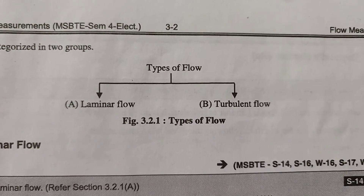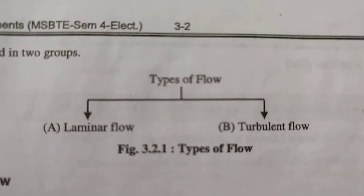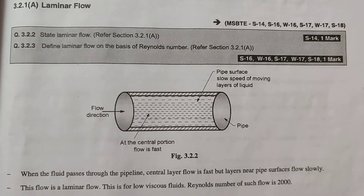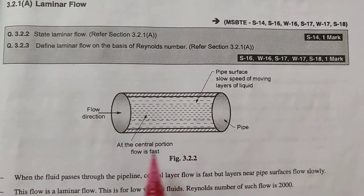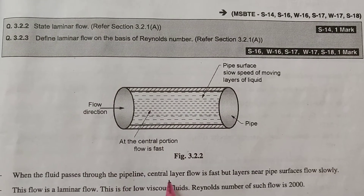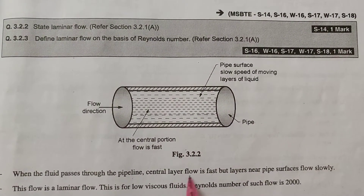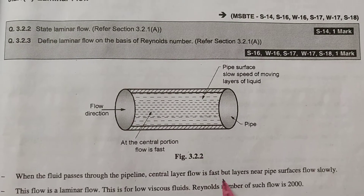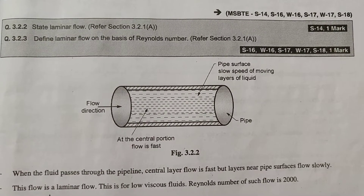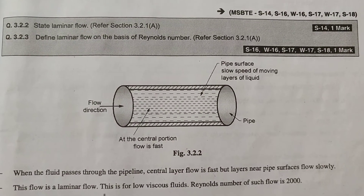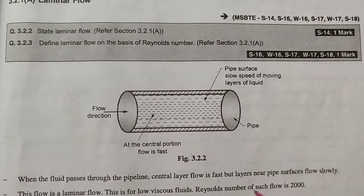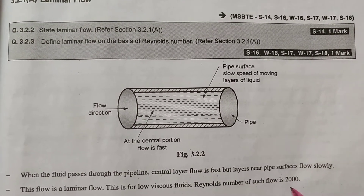Now let's see types of flow. There are two types: laminar flow and turbulent flow. In laminar flow, when the fluid passes through the pipeline, the central layer flows fast but layers near the pipe surface flow slowly. This is laminar flow, for low viscous fluids. The Reynolds number for such flow is 2000.